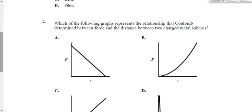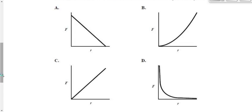Which of the following graphs represents the relationship that Coulomb determined between force and distance between two charged metal spheres? Force and distance would be which one? A, B, C, D? It would be D.